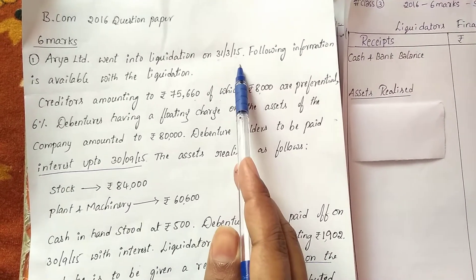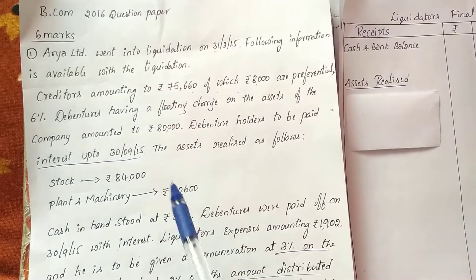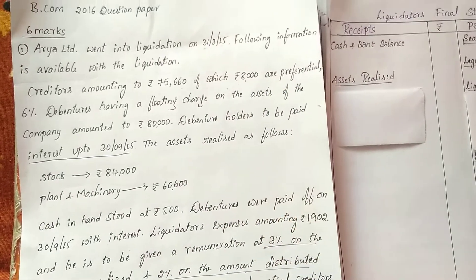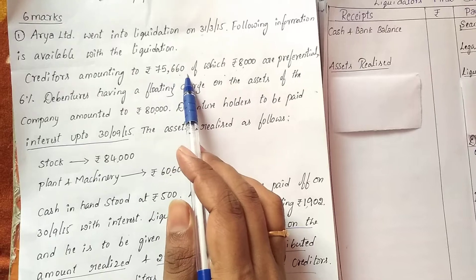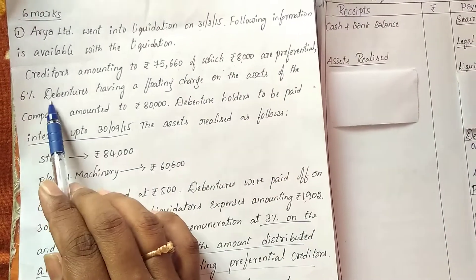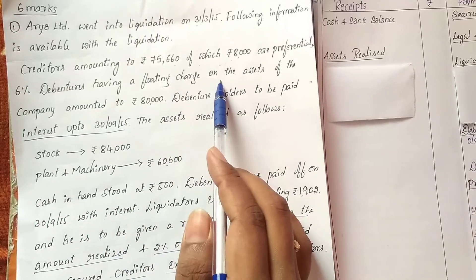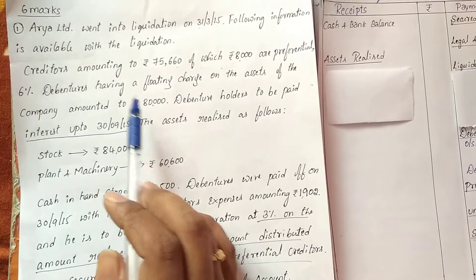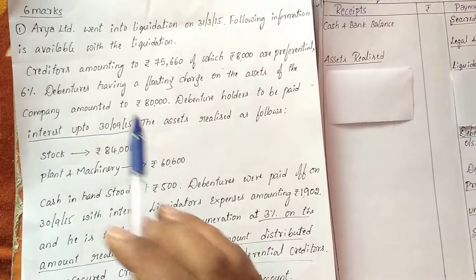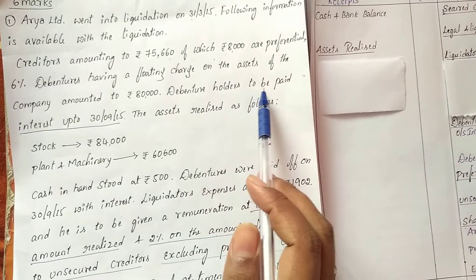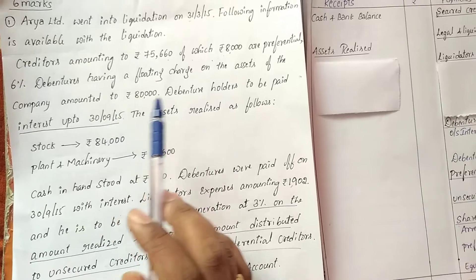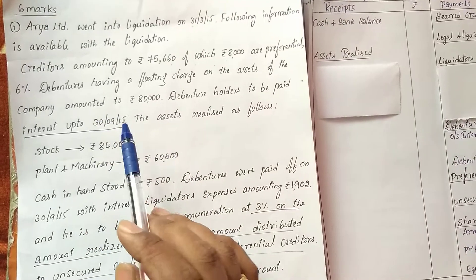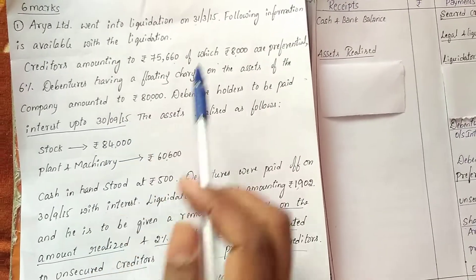Note the date carefully. Following information is available: creditors amounting to rupees 75,660, of which rupees 8,000 are preferential creditors. Next, 6% debentures having a floating charge on the assets of the company amounted to rupees 80,000. The debenture holder is to be paid interest up to 30th September 2015.